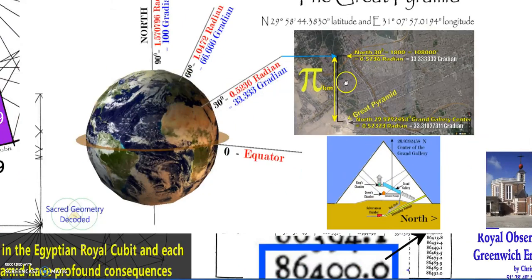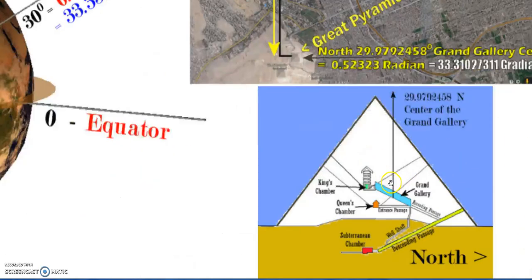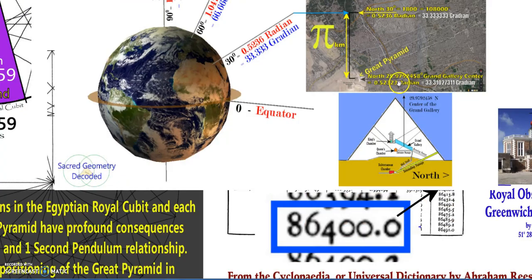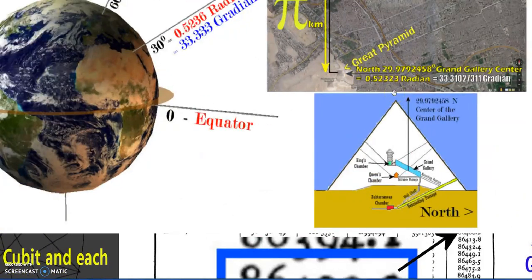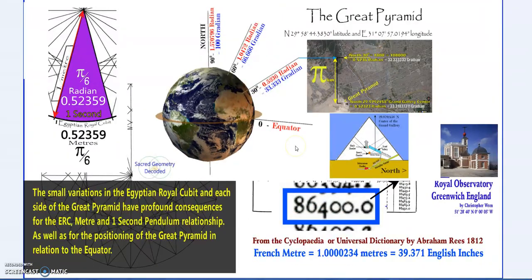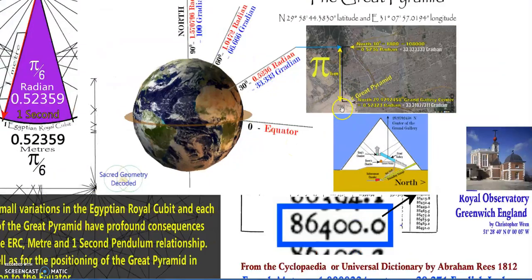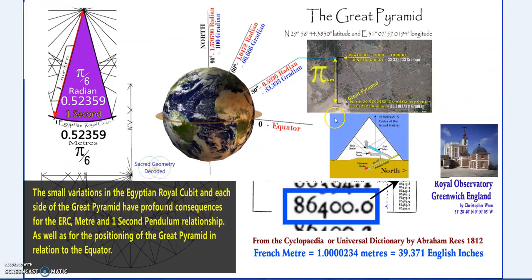It's interesting that this point of 30 degrees—the center of the Grand Gallery, which is a nice number in terms of degrees—is pi kilometers south of 30 degrees. You can measure this in Google Earth or Google Maps. That's 0.2323 radians.